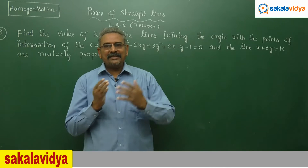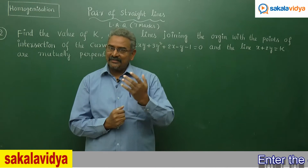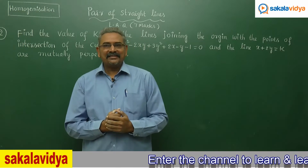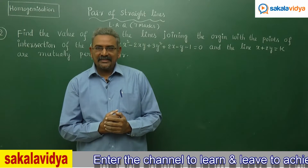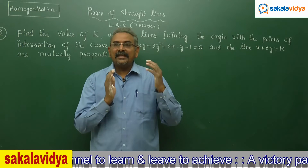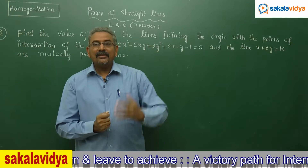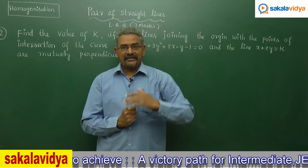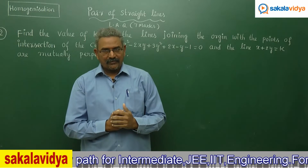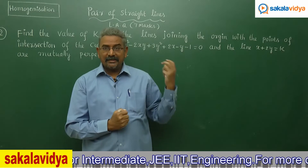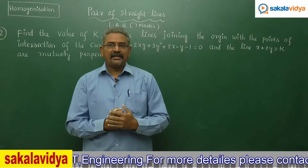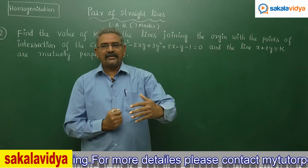This means A + B = 0. Here, A represents the coefficient of x² and B represents the coefficient of y². So if the two lines are mutually perpendicular, the key condition is: coefficient of x² plus coefficient of y² equals 0. With this concept, this problem can be cracked. After reading the problem statement, we shall solve it by homogenizing and applying the condition that coefficient of x² plus coefficient of y² equals 0.